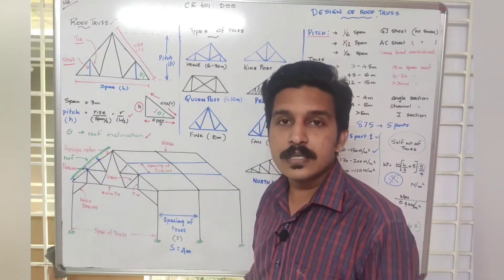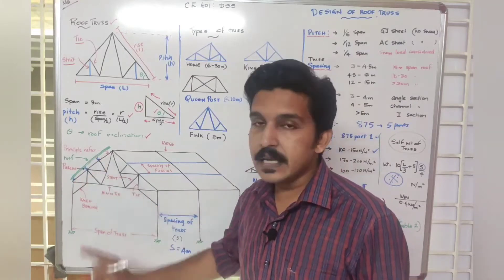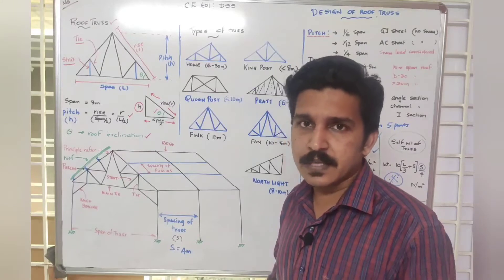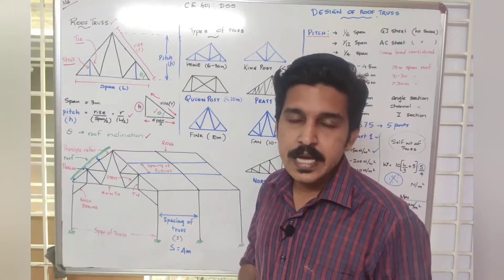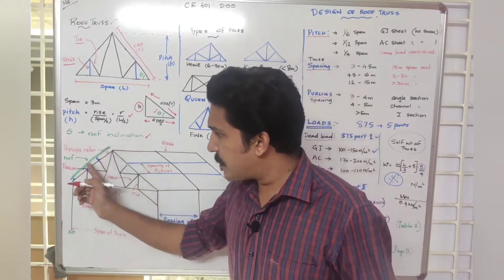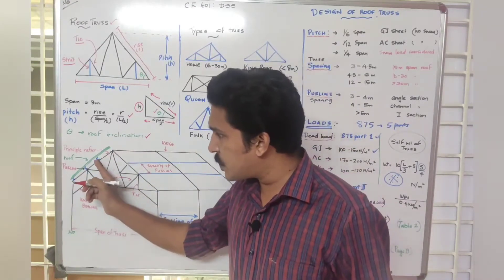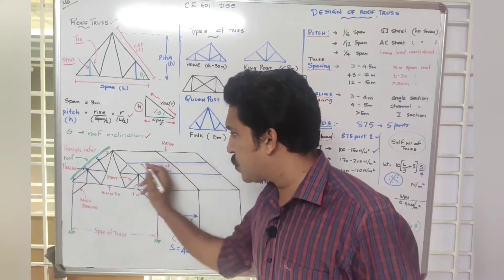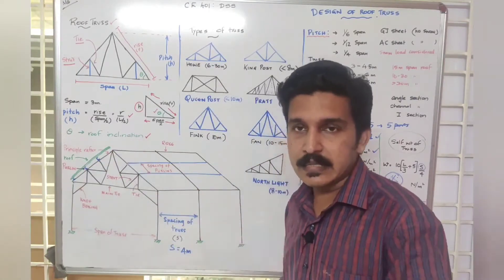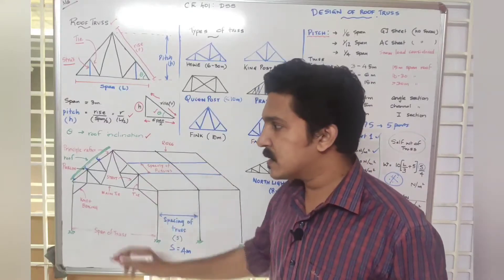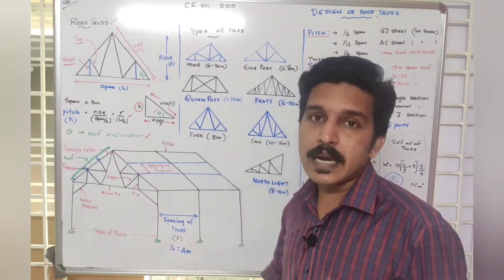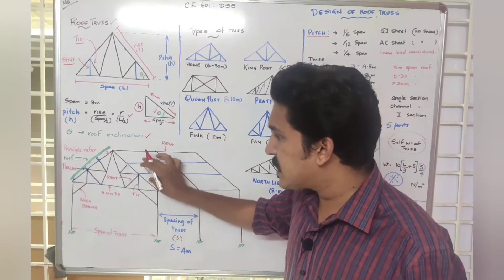Roof members can be made of galvanized steel (GI sheet), asbestos cement sheets, or other roofing materials. Purlins are provided to support the roof members. The purlin spacing depends on the type of roofing sheet used and the span of the truss.